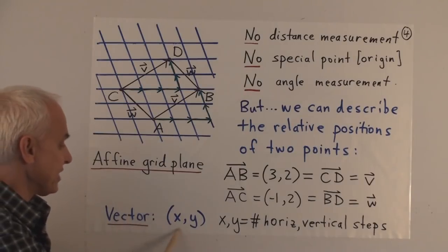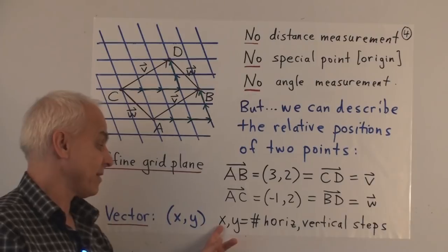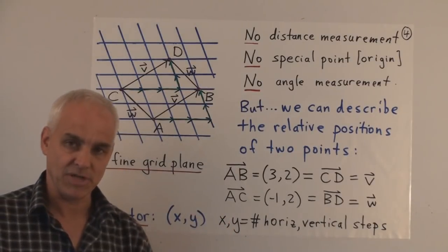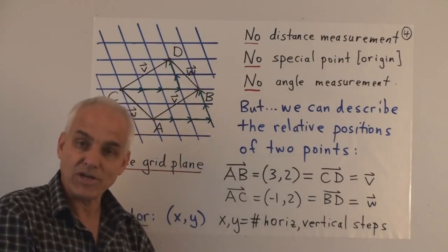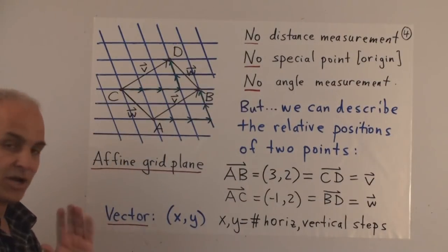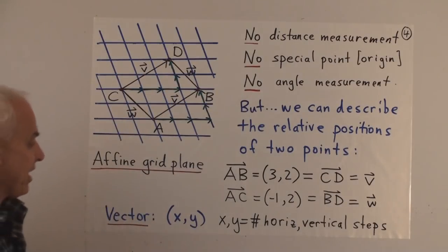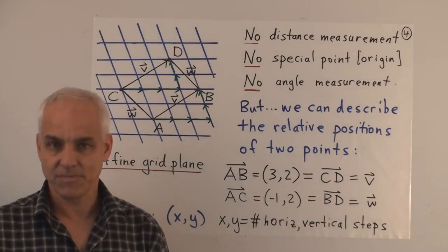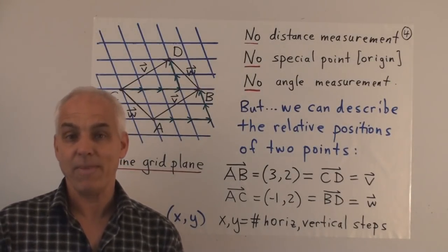In general, a vector is a relationship between any two points of our grid plane, encoded by a pair of numbers (x, y) in round brackets. The x means the number of horizontal steps you're taking — where horizontal is just your first line — and y is the number of vertical steps, the number of steps along the second family of lines. Each of these families of lines has to have a chosen positive direction. This is our connection between geometry and algebra: geometrically, we have a vector or a directed line segment; algebraically, we have an ordered pair of numbers.